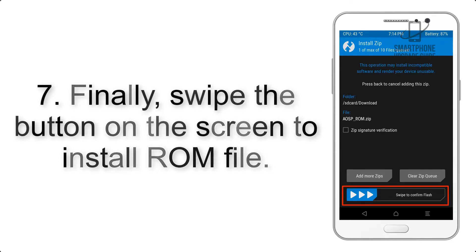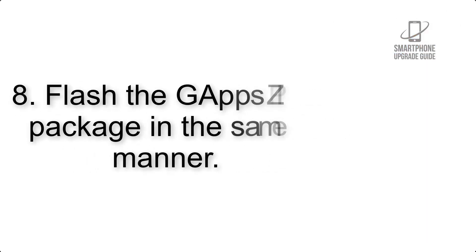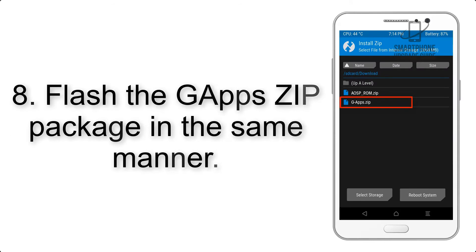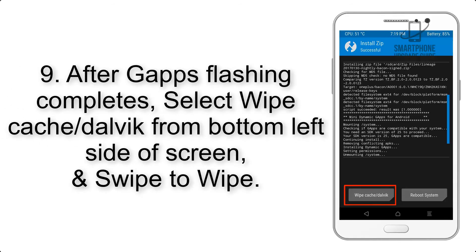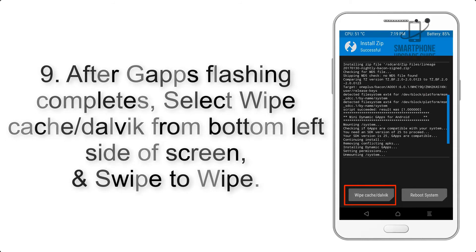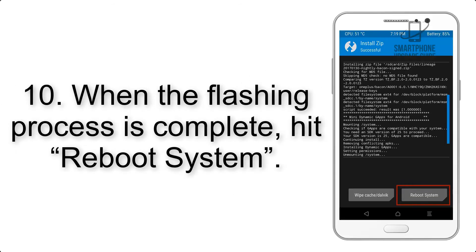Step 7: Swipe the button on the screen to install the ROM file. Step 8: Flash the GApps zip package in the same manner. Step 9: After GApps flashing completes, select Wipe Cache and Dalvik from the bottom left side of the screen and swipe to wipe.